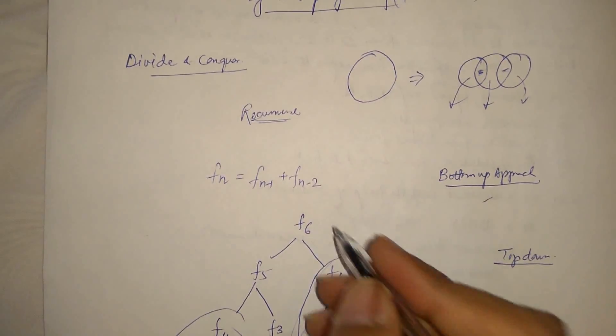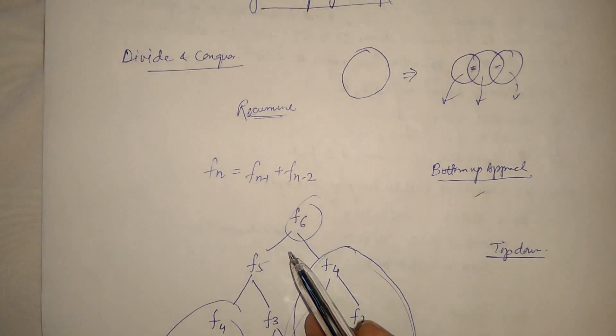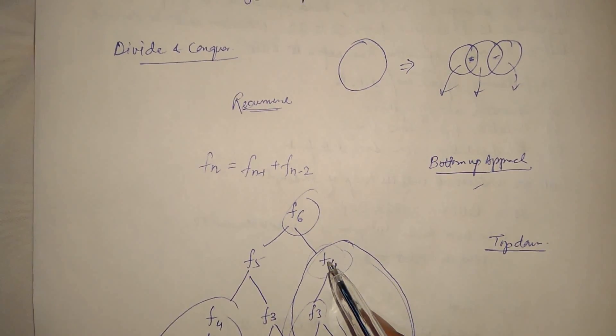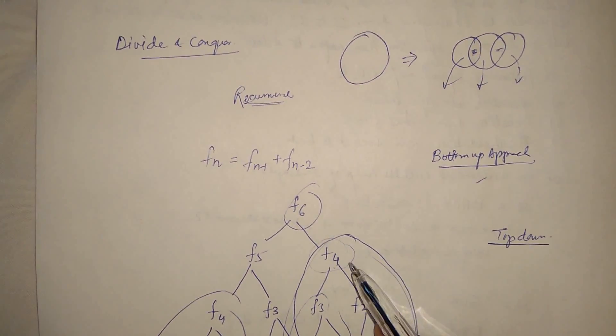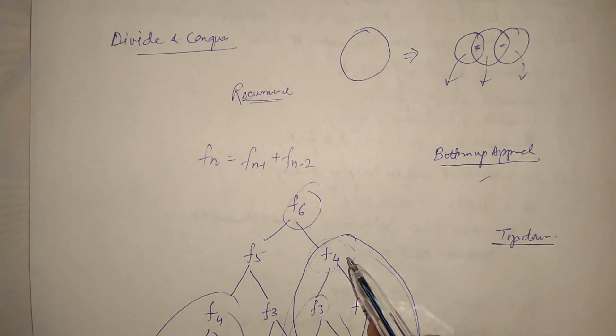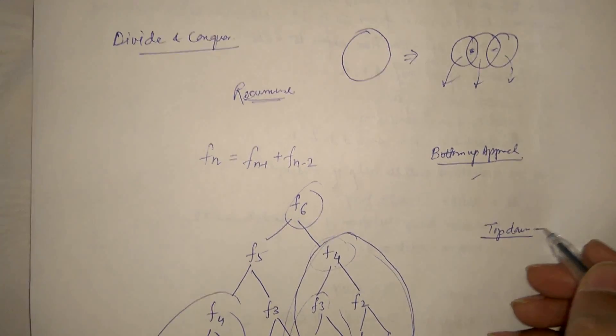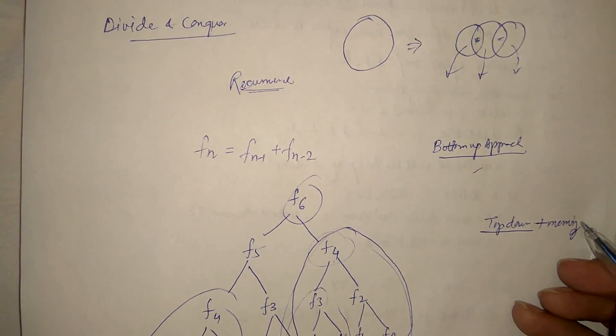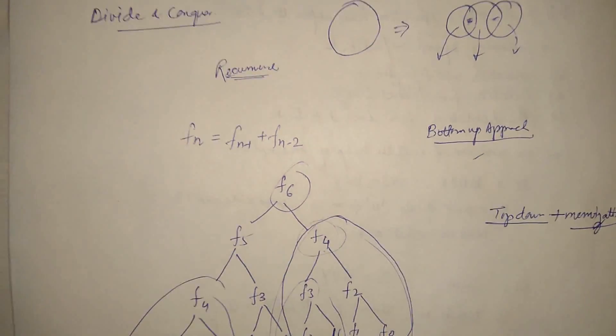So whenever we encounter with the same subproblems, which is already solved earlier, we will directly use the value rather than solve it again. So in bottom up approach, in top down, we start from F6 and we start computing. So when we are computing F4, we will first compute F4 and we memoize the result. So top down always occurs with memoization.